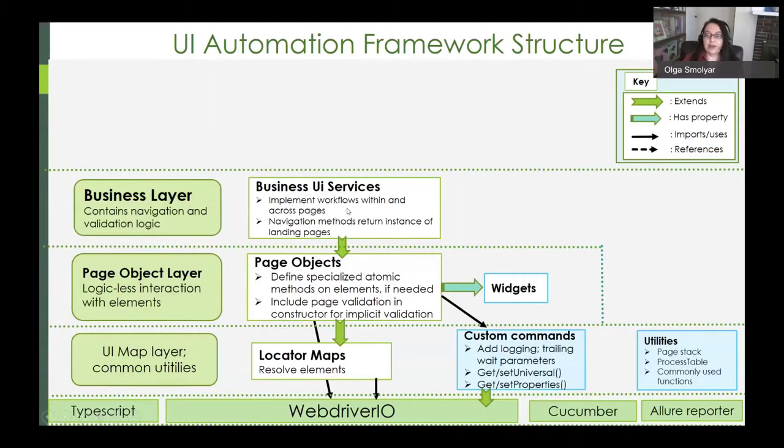The business layer contains the application's navigation and validation logic and is implemented via so-called business UI service classes. These extend page object classes and implement workflows within and across pages. They also model the relationships among pages and the flow within the application, by having their navigation methods return an instance of the landing page. Meaning anytime an action results in navigation to a new page, the method that performs the action instantiates and returns an instance of the child page class.